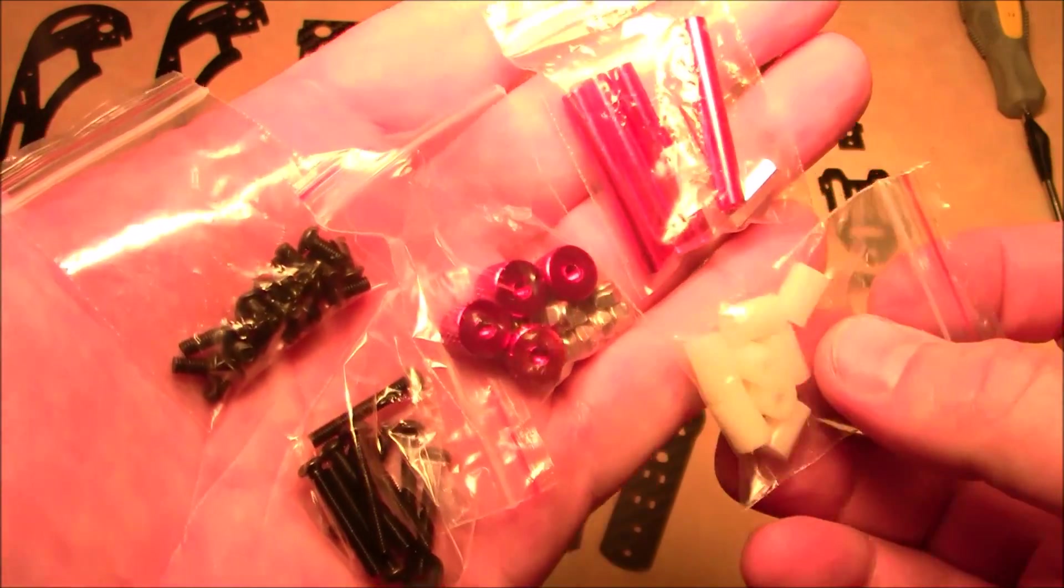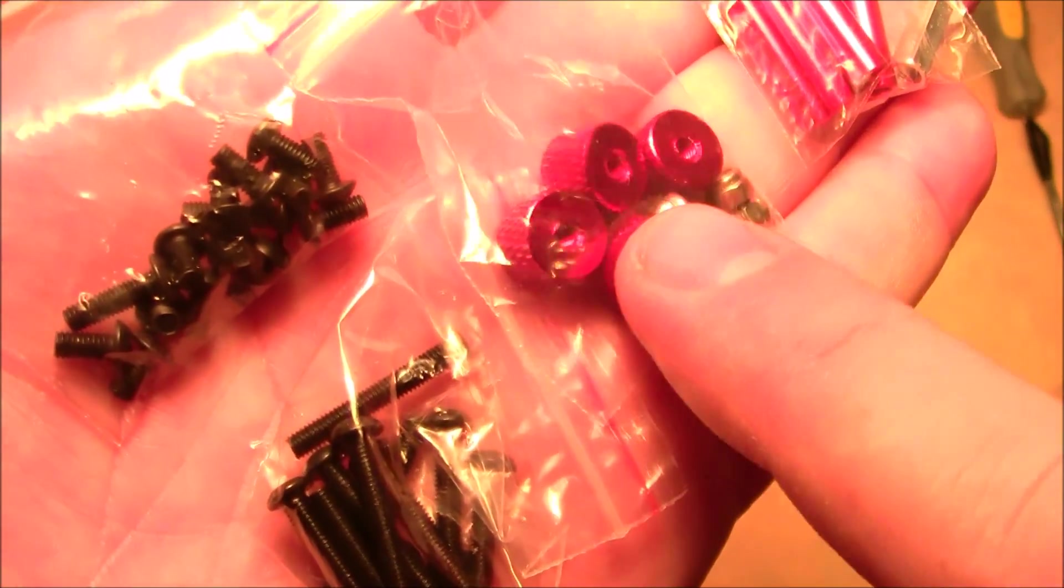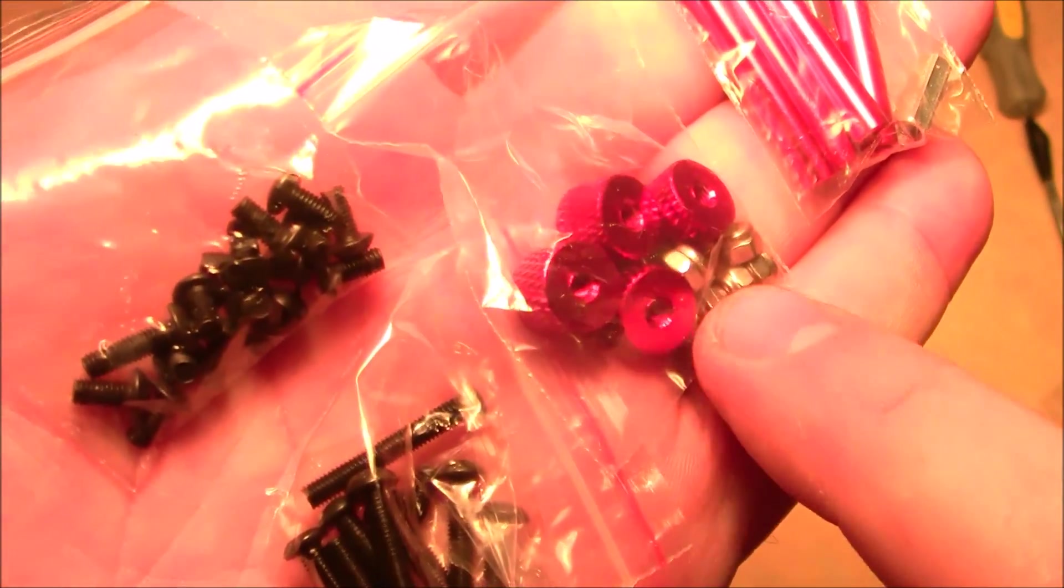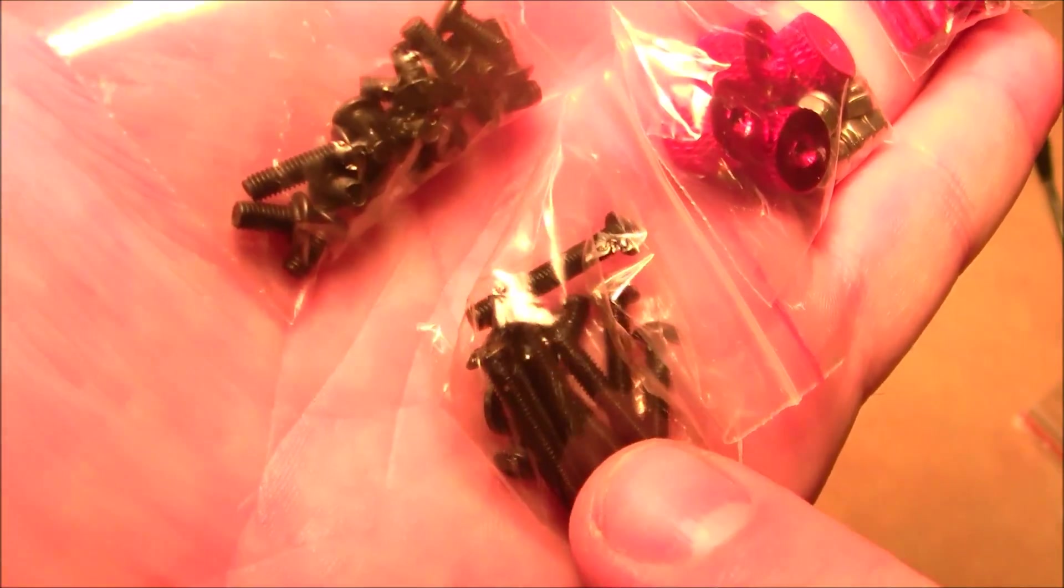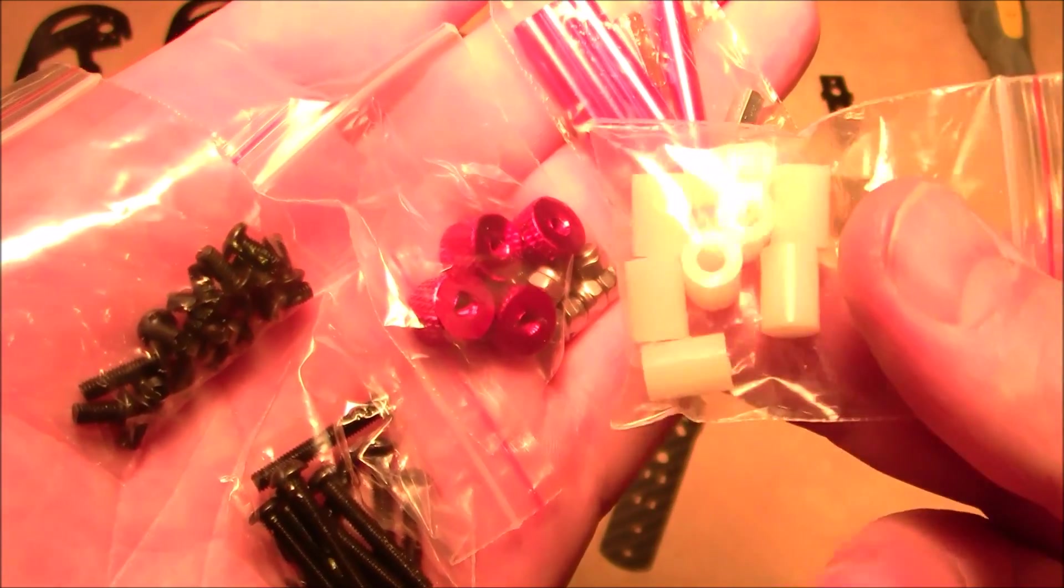These are the goodies that come inside the bag. It has the spacers, and these are the finger tighteners so you can bend the arms. It has some long screws and some shorter screws and some little plastic spacers.